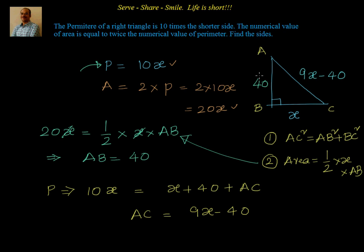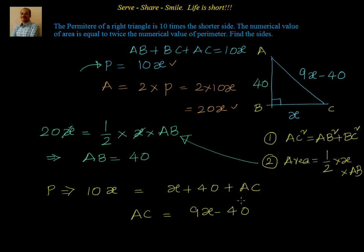Now we can apply Pythagoras theorem because we know all three sides. We started with shorter side BC equals x, perimeter equals 10x, which means AB plus BC plus AC equals 10x. Using the area formula we found AB equals 40. With two sides as x plus 40, the third side is 9x minus 40, since 40 minus 40 cancels and 9x plus x equals 10x, satisfying the perimeter condition.